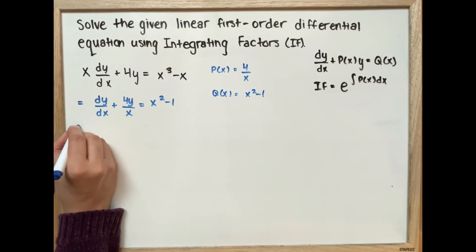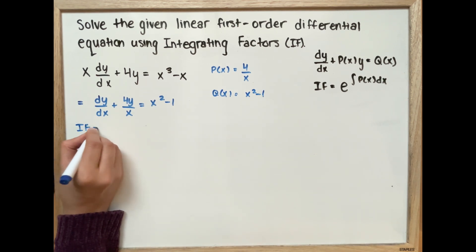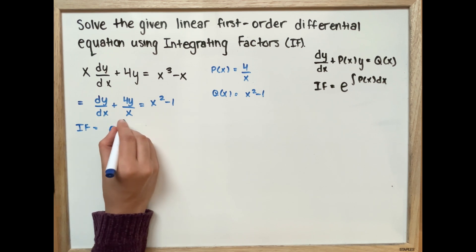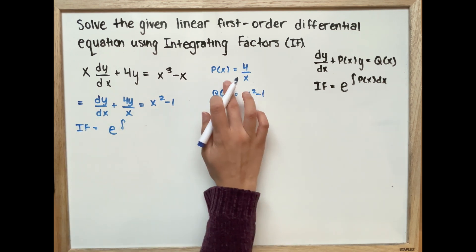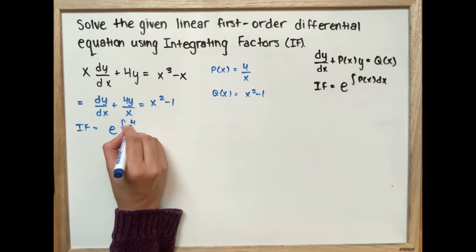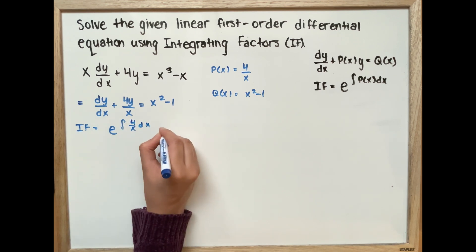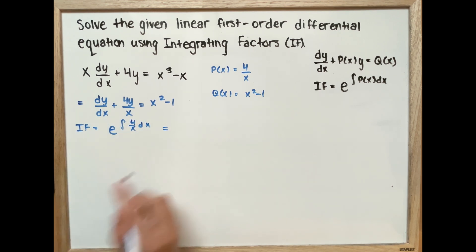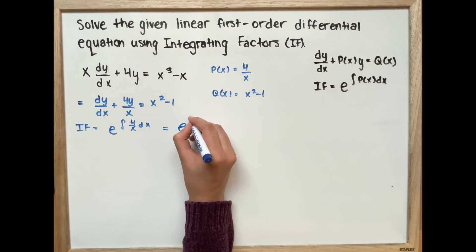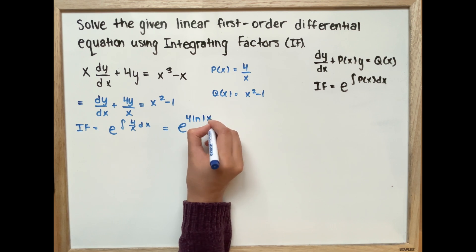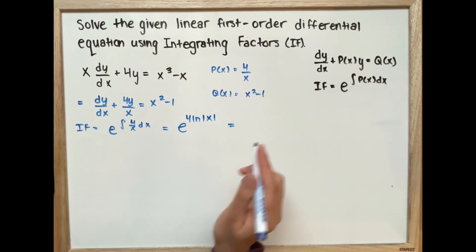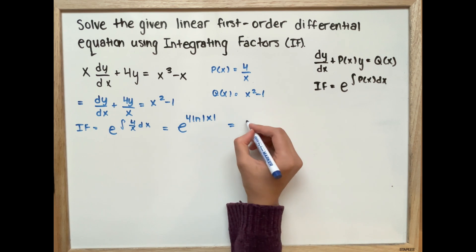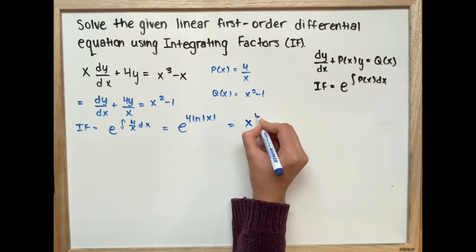Now we find our integrating factor, which is e to the power of the integral of P(x) dx, which is the integral of 4 over x dx. Taking the integral gives us e to the power of 4 ln of the absolute value of x. Since e and ln cancel, this simplifies to x to the power of 4.